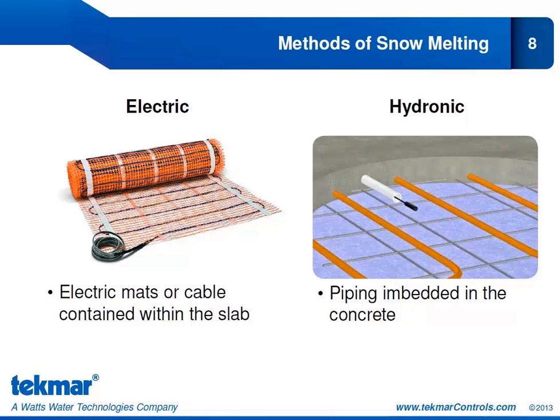Once we've decided upon a snow melt system, we have another choice: are we going to go with an electric snow melt system or a hydronic snow melt system? An electric system will have mats or cable contained within the slab, and a hydronic system will have piping embedded in the slab itself. We'll look at the differences and the advantages and disadvantages of each in the upcoming slides.